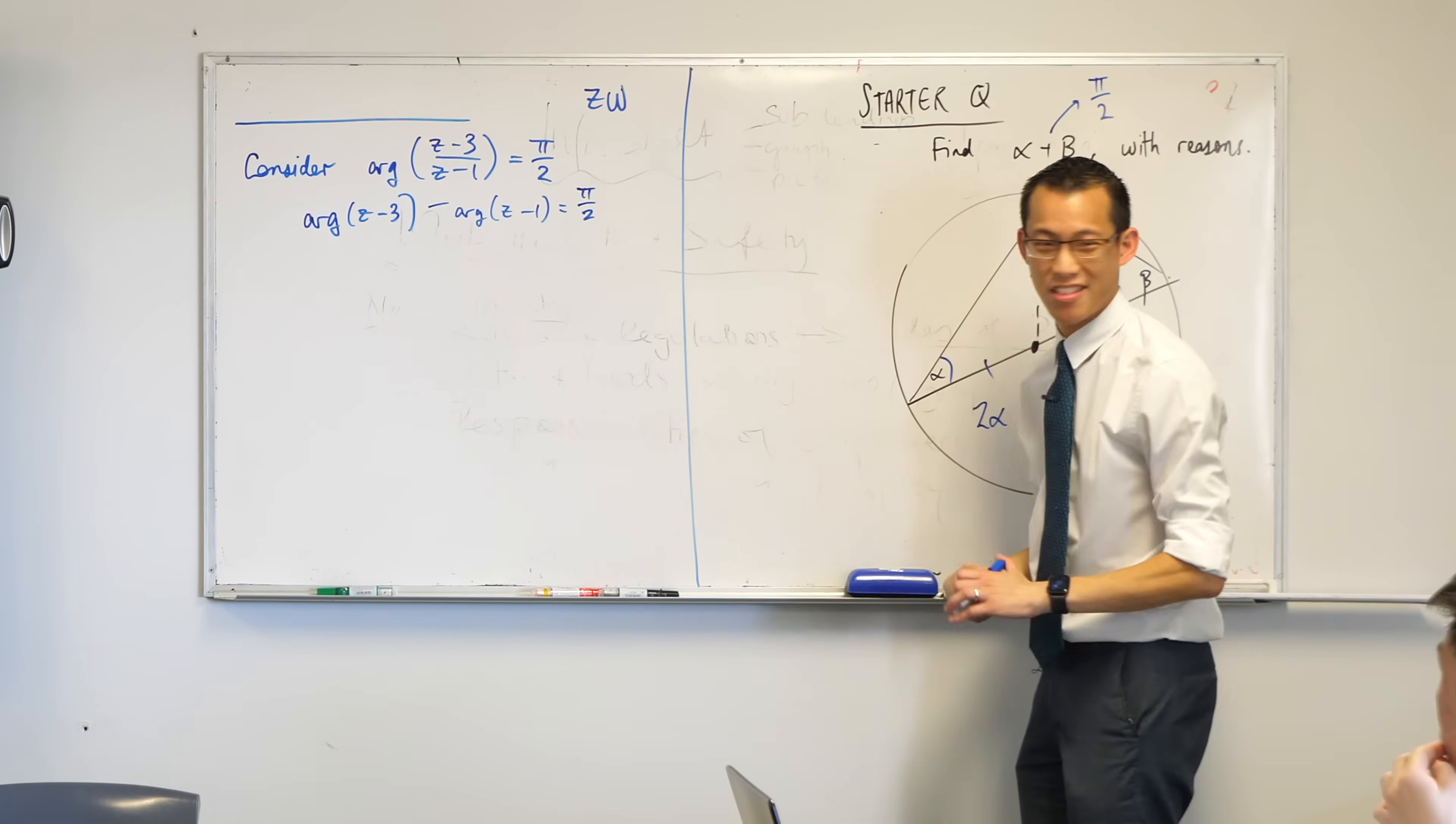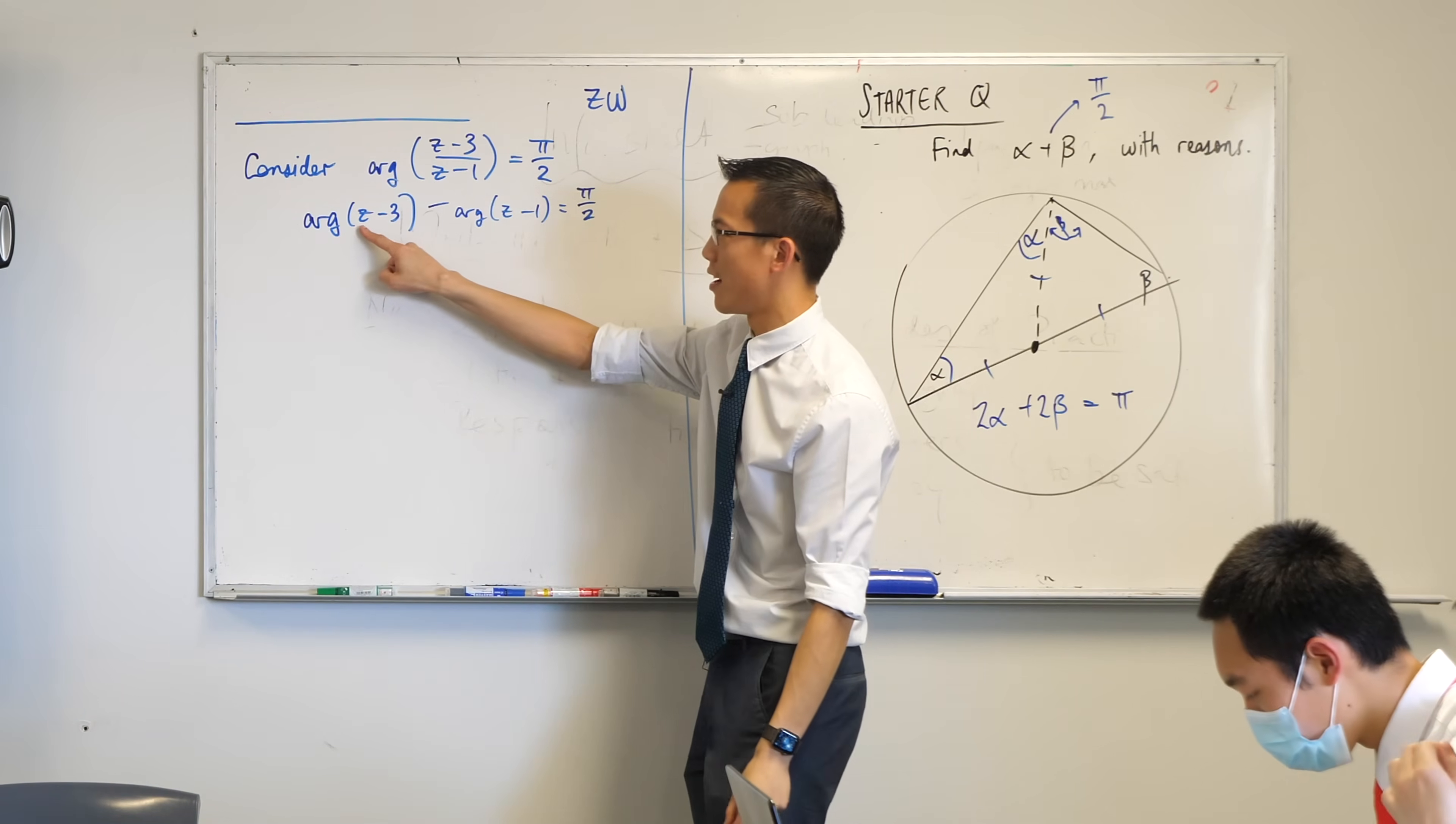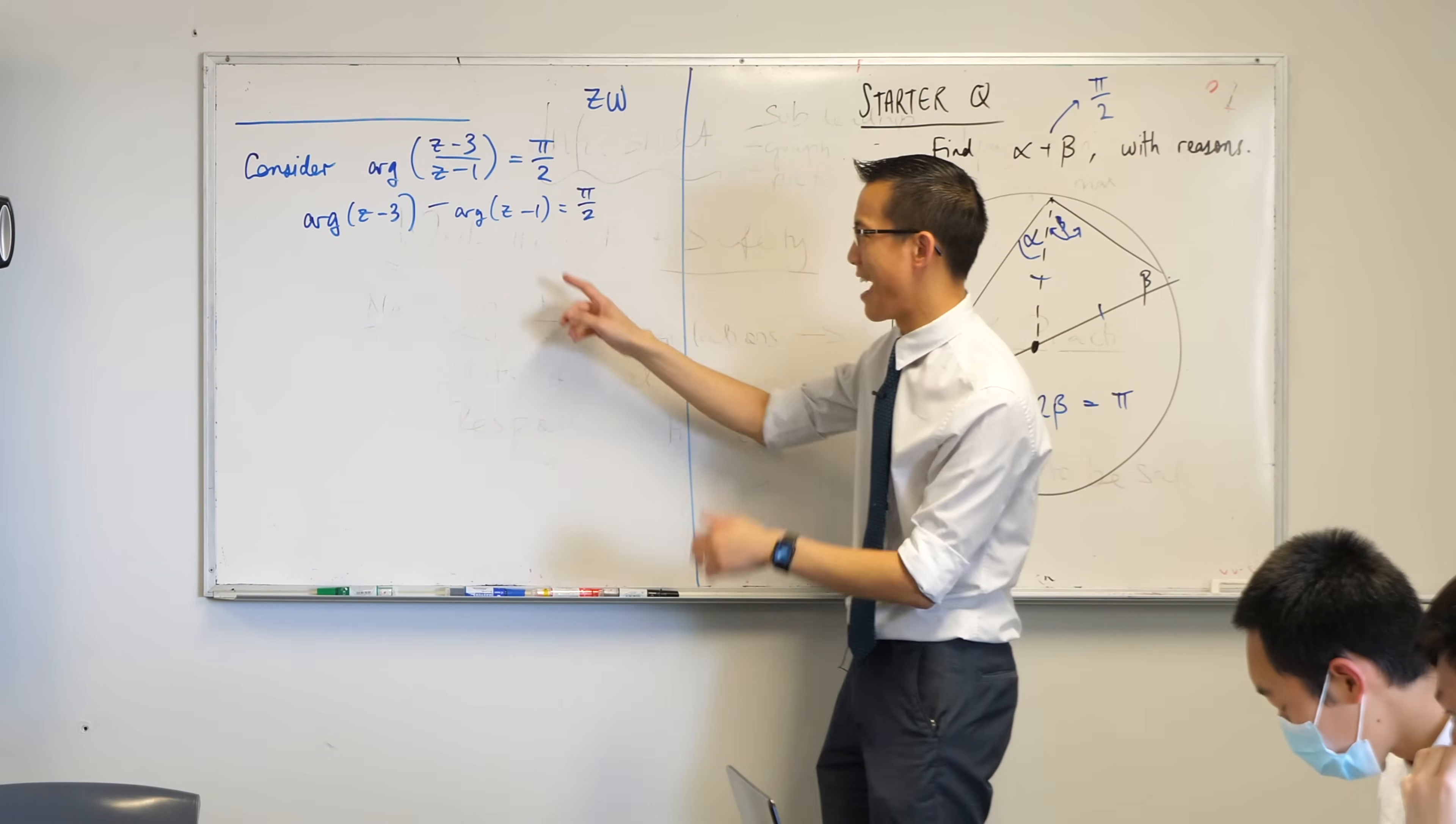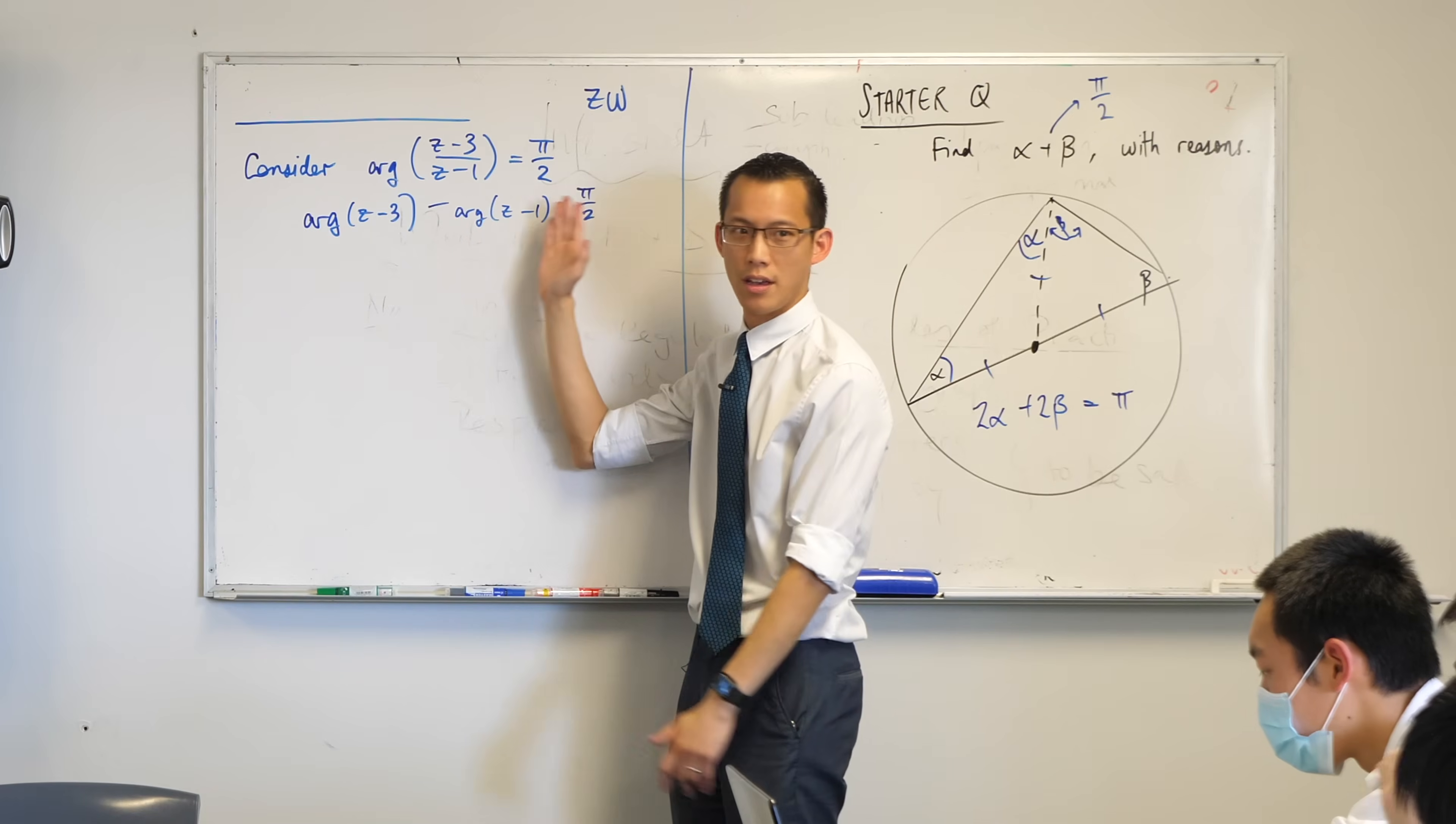This is an alternative way to write the same thing, but what does this mean? Have a think about this with me. There's some complex number z. It can sort of fly around the complex plane, but I want it to be in exactly the place where if you measure the angle from three to our complex number z, and you take the difference with the angle measured from one to the same complex number, apparently we want that difference to be pi on two.